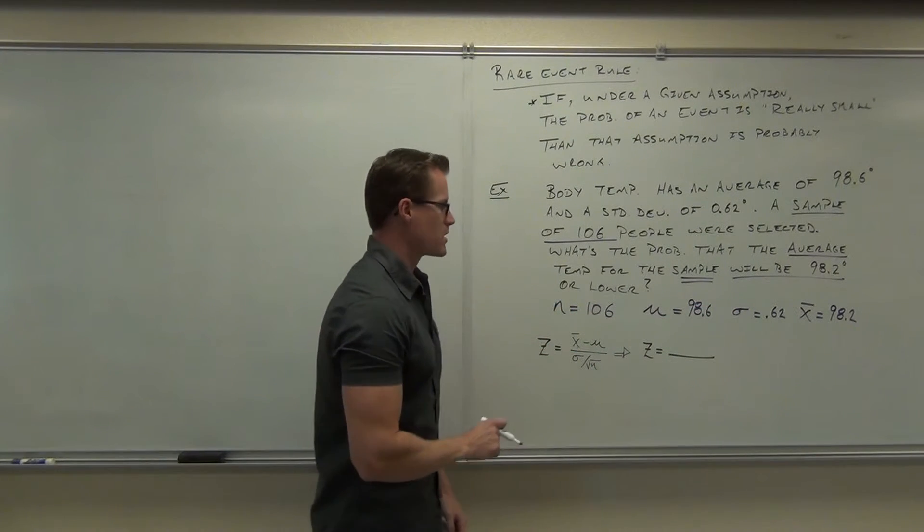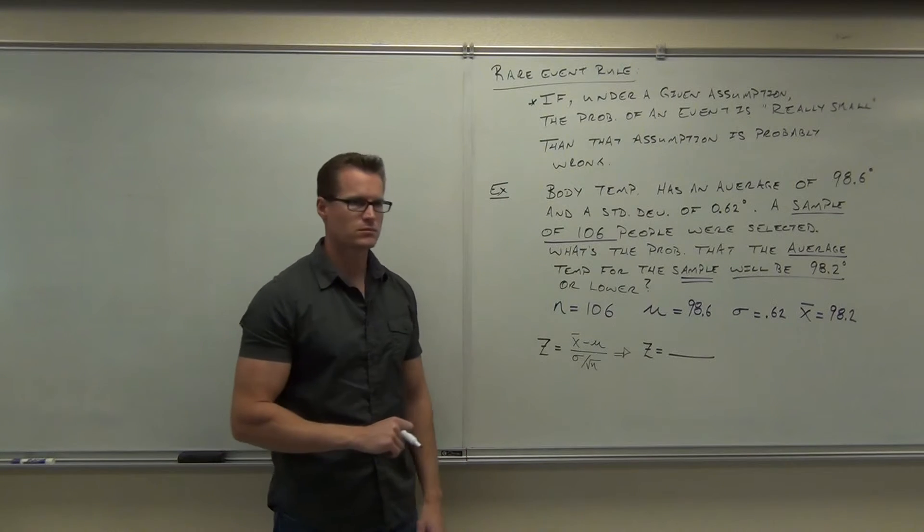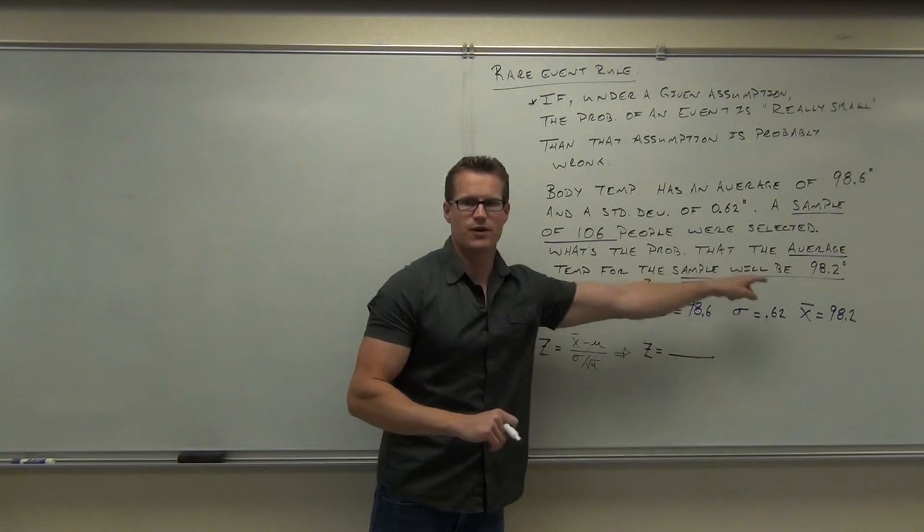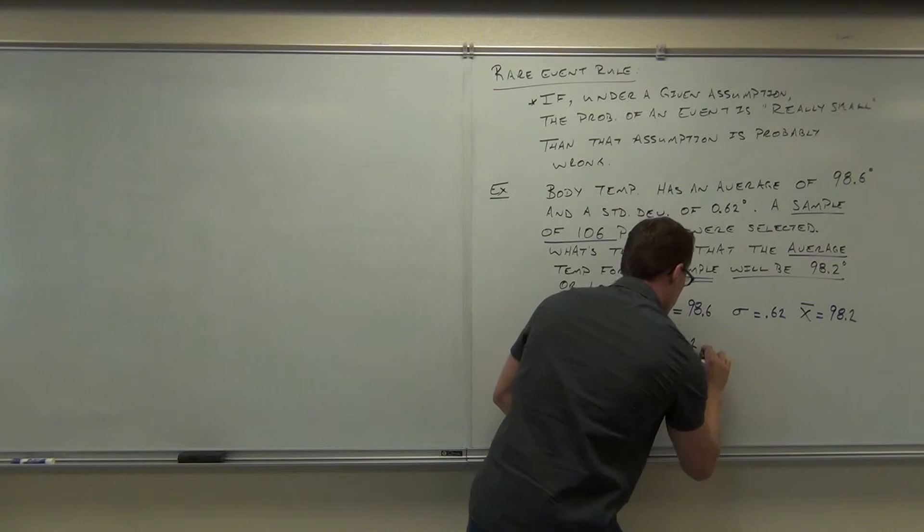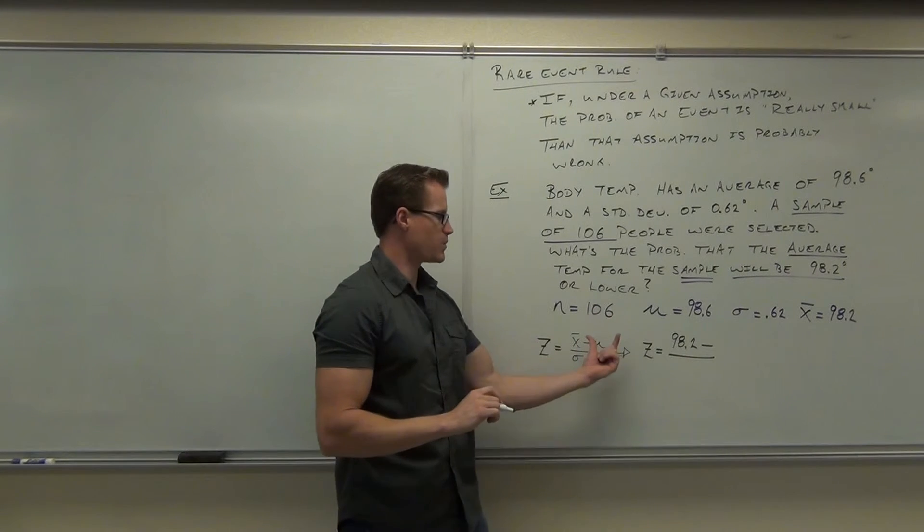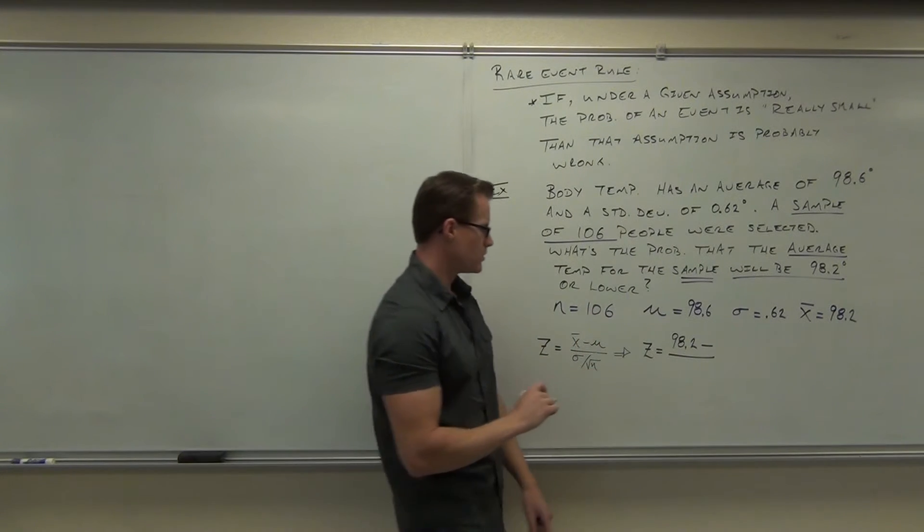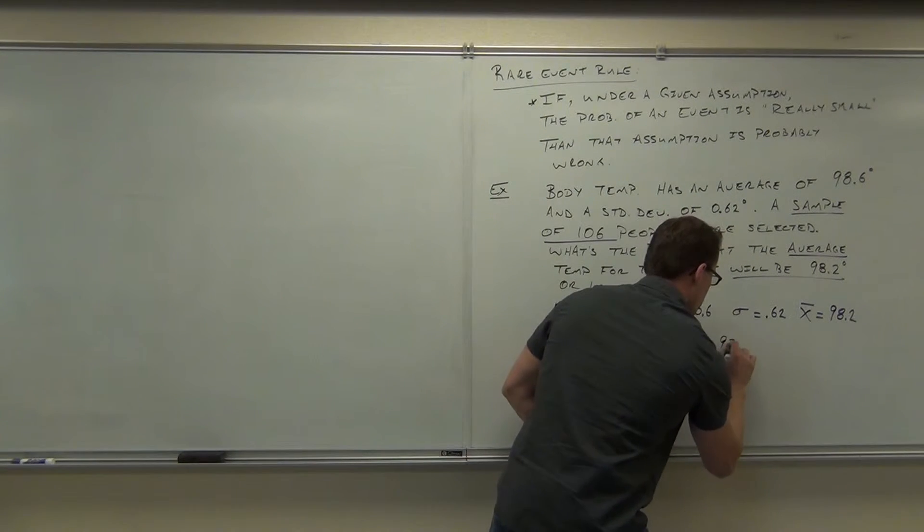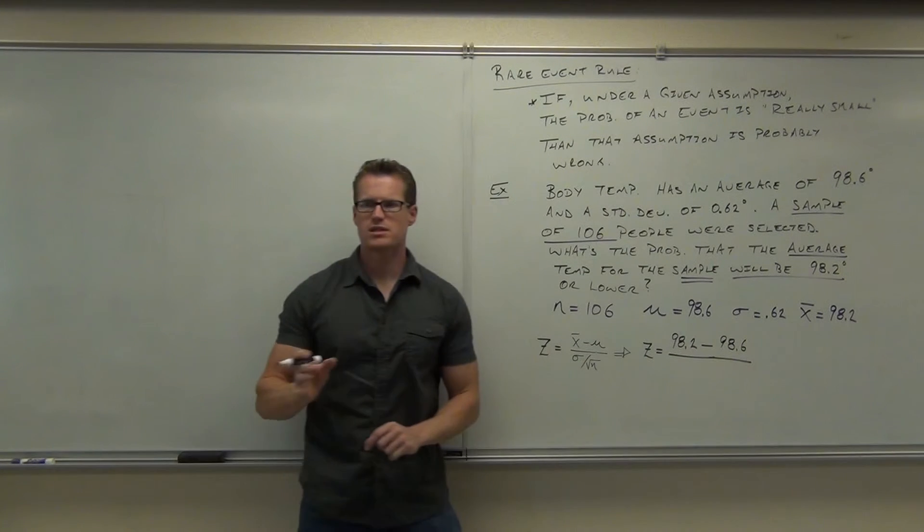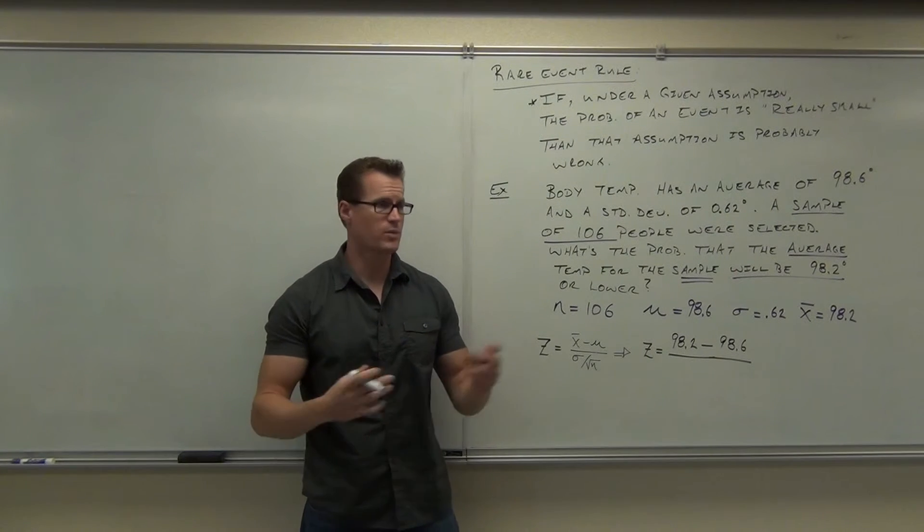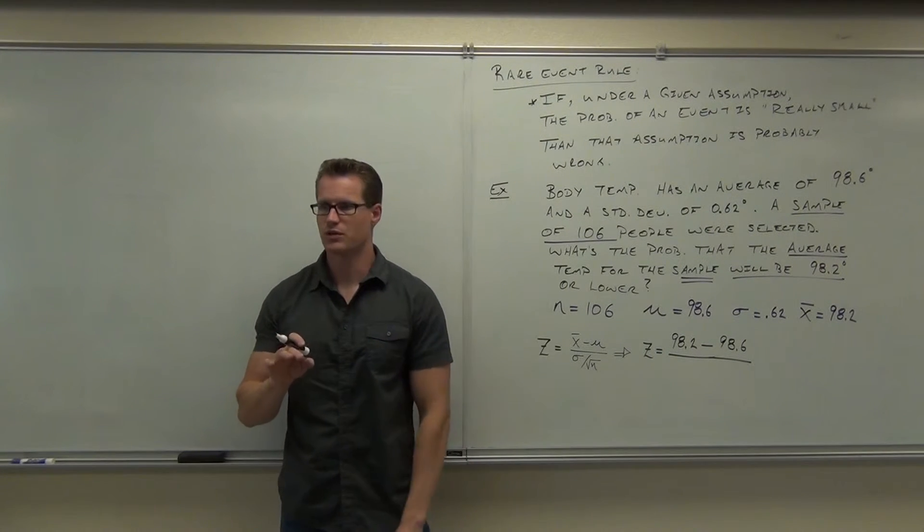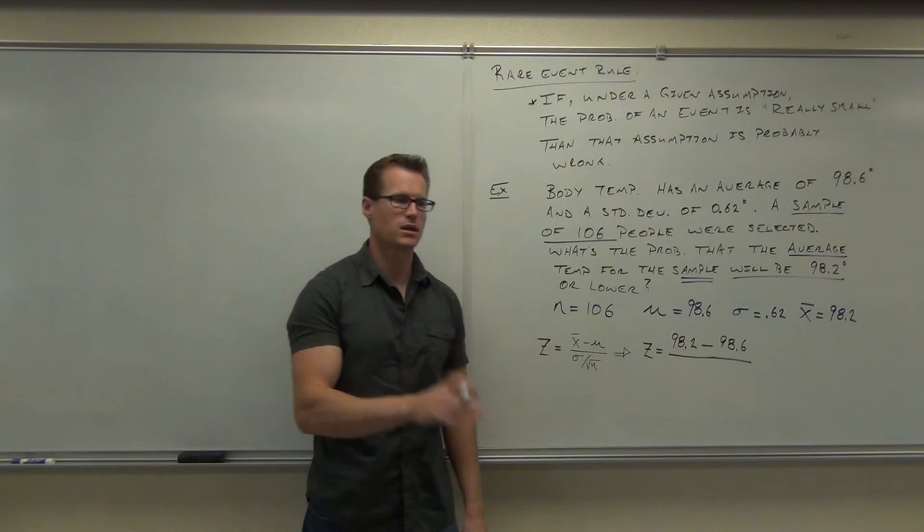What is our x-bar here? We've already done the legwork and identified that, haven't we? So now we just have to substitute that in. 98.2. Okay. Minus. We take our x-bar minus our mu. What's our mu? 98.6. Notice how if you get those two things confused, you're going to get a positive z-score where you want a negative z-score, or a negative z-score where you want a positive. It'll be off by a sign. It'll be the opposite of what you're looking for. Your area will be completely wrong.